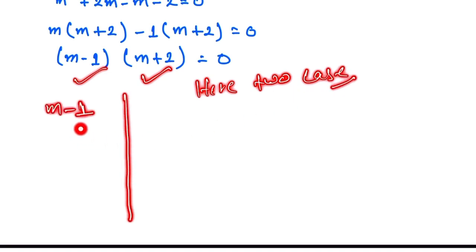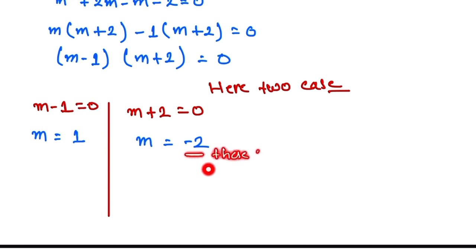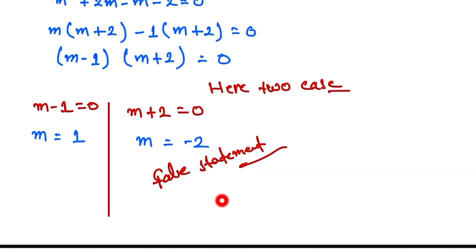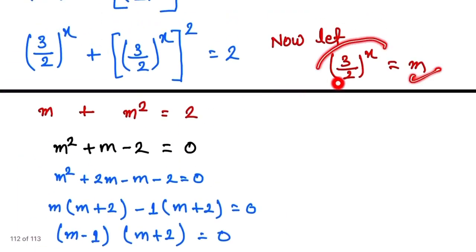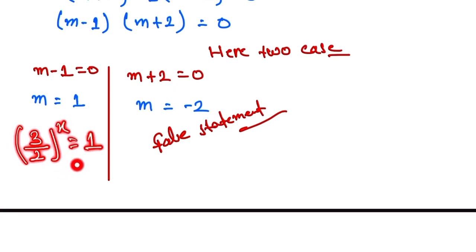This gives us two cases: m minus 1 equals 0, so m equals 1; and m plus 2 equals 0, so m equals minus 2. The value m equals minus 2 is a false statement — we cannot take this, so we reject it.